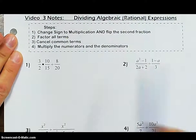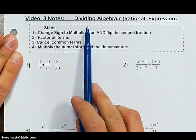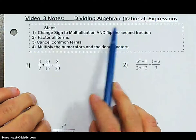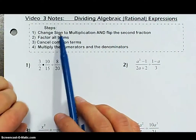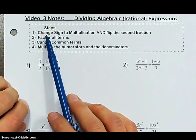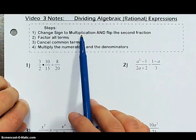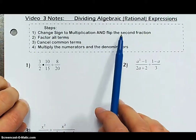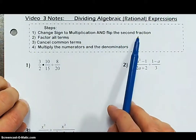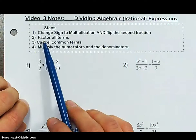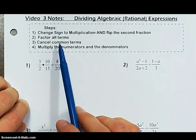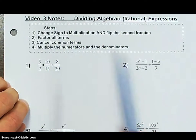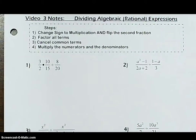Here are your steps for dividing your fractions. If you remember back in sixth grade when we started dividing fractions, the first thing you have to do is change the sign to multiplication and flip the second fraction. Then we're going to factor all the terms, cancel common terms, and then multiply the numerators and the denominators.